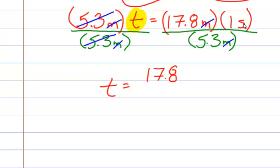We have 17.8 on the top times 1 is 17.8. And the only units we have left remaining on the top is seconds. And this is all divided by 5.3. We have no units down here on the bottom.